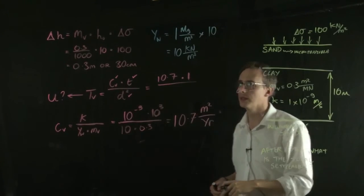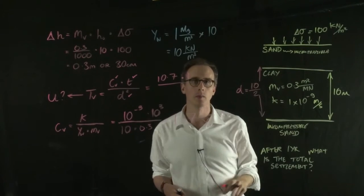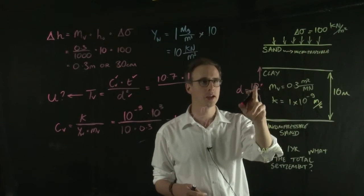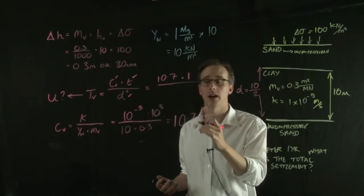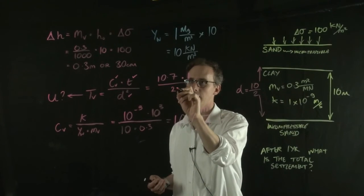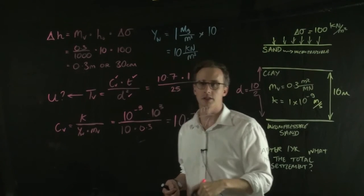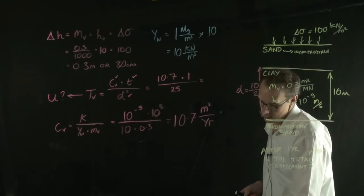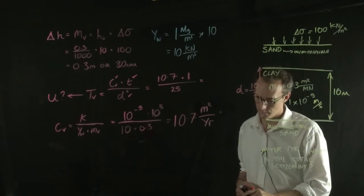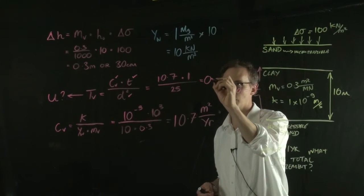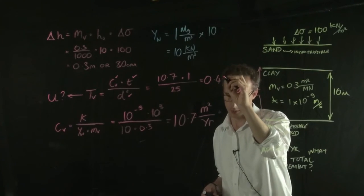So 10.7 times 1. And the D value is 10 over 2, which is 5. 5 squared is 25. So the time factor value comes out at 0.428.